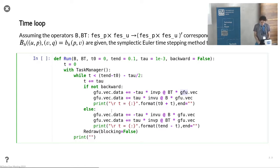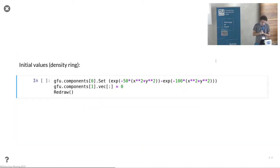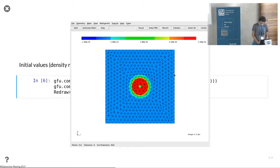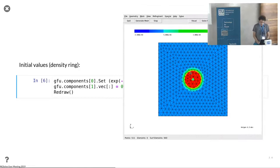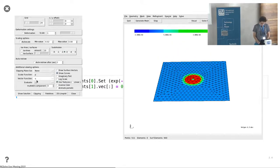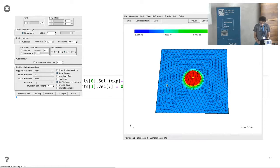For fun, we also implemented the backward step, so we can put this time loop not going forward in time but backward in time. We prescribe initial values for the pressure and zero values for the velocity, which is kind of a blob that goes to the interior.